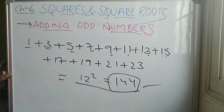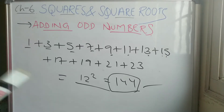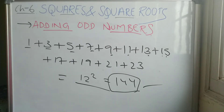So whenever it is given to add consecutive odd numbers starting from one, you have to apply this formula: just count the numbers and square that number. That's it!